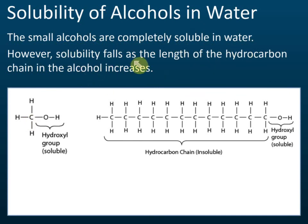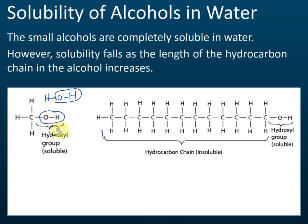The solubility falls as the length of the hydrocarbon chain in the alcohol increases. That is because of the presence of the OH group, which causes it to be soluble in water. When you compare this OH group with the structure of a water molecule — water is HOH — you can see that it also has an OH. The structure is similar to the structure in a water molecule, and this hydroxyl group causes the alcohol to become soluble.